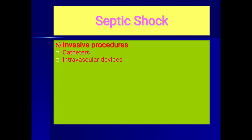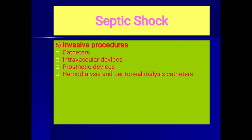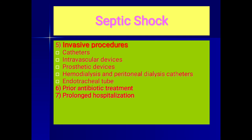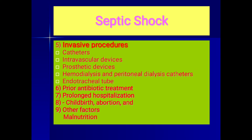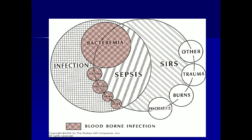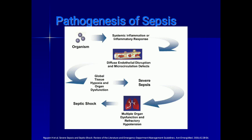Invasive procedures like catheters, IV devices, prosthetic devices, endotracheal tubes, and prior antibiotic treatment, as well as prolonged hospitalization, childbirth, abortion, and malnutrition can also predispose to septic shock. The pathogenesis progresses from minor infection to bacteremia and sepsis, which increases to SIRS (systemic inflammatory response syndrome), causing systemic vasodilation and septic shock.